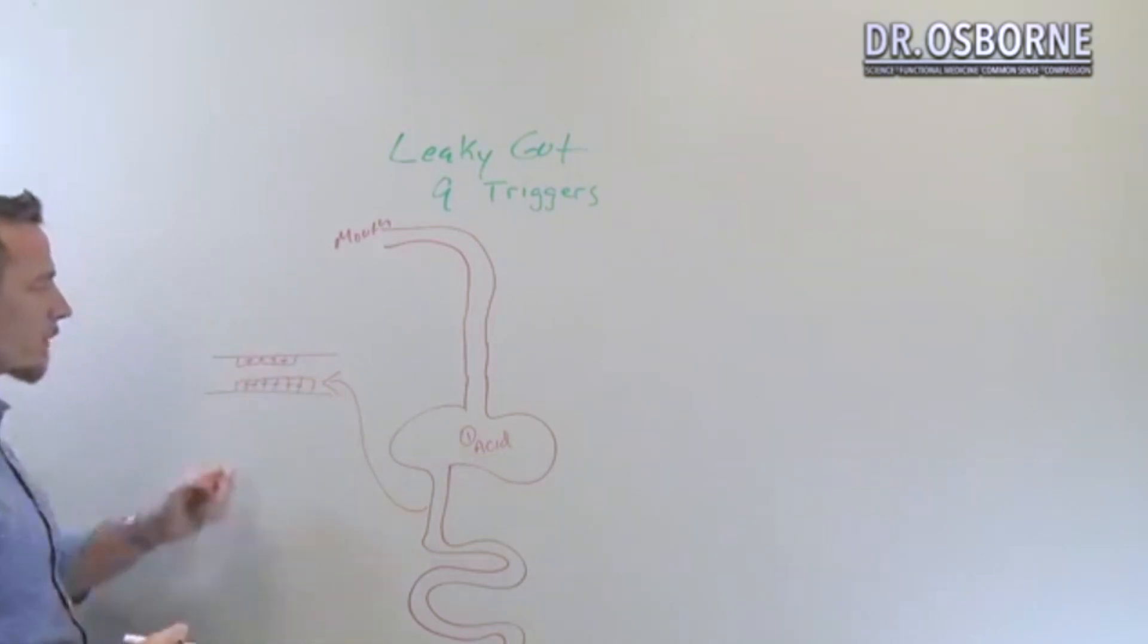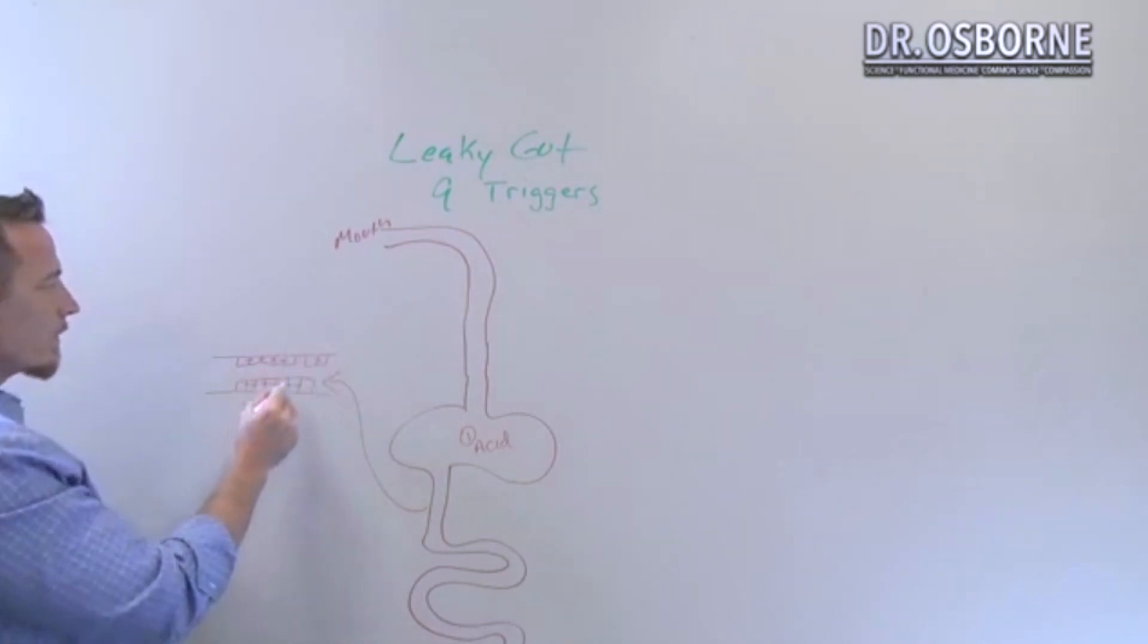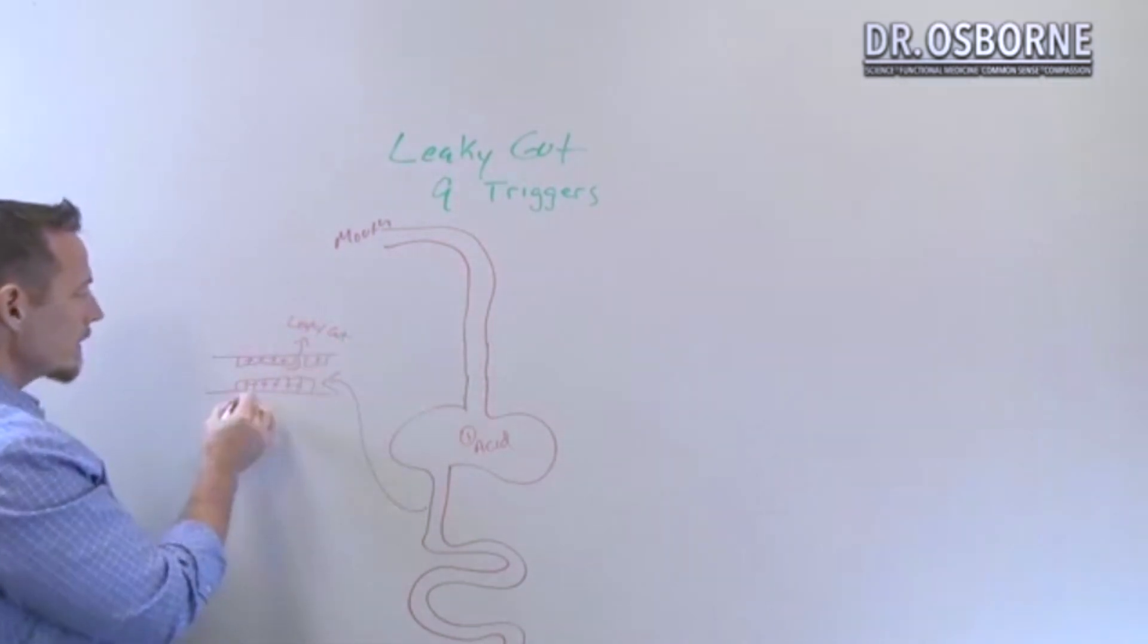So again, if this is part of the gut tube, if those little anchor proteins are not doing their job properly, this is where we develop leaky gut or intestinal permeability. So these proteins are called tight junctions. You've probably heard of them if you follow functional medicine. Tight junctions are one of the barriers as well.